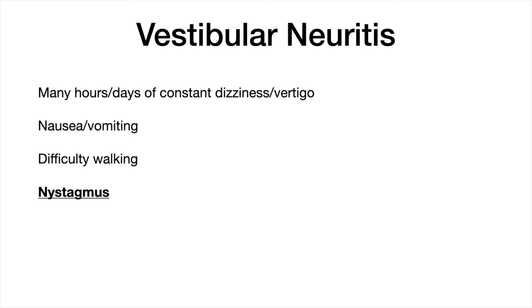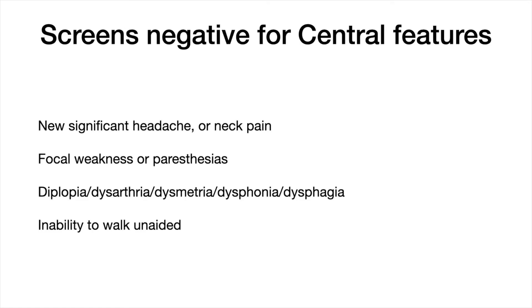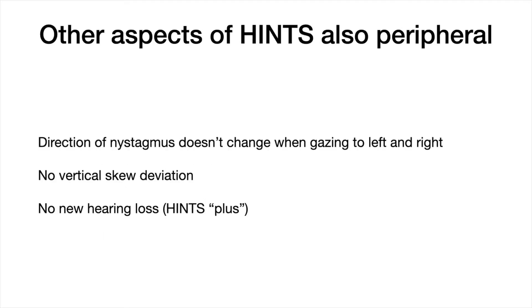If a patient has suspected vestibular neuritis with constant vertigo for hours or days, nausea, vomiting, difficulty walking, and horizontal torsional nystagmus, and they screen negative for central features, and the other HINTS exam components show the nystagmus doesn't change direction, no vertical skew deviation, and no new hearing loss — the HINTS-plus criteria — then you perform the head impulse test. It should be abnormal on one side and normal on the other, as in this gentleman with vestibular neuritis. This woman having a cerebellar stroke has a normal head impulse test on both sides because the VOR doesn't involve the cerebellum.